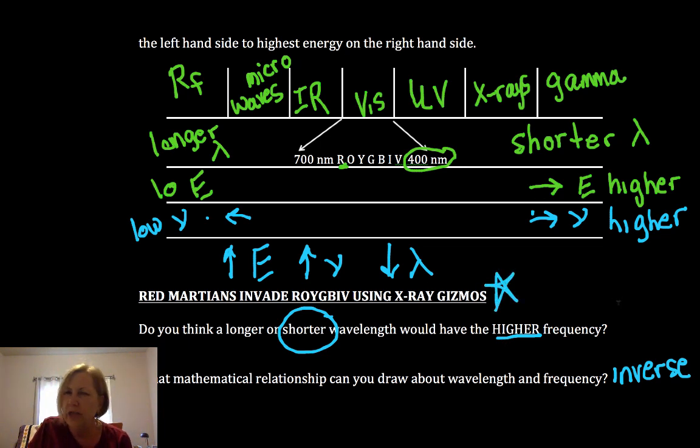Before I leave this slide, I don't want to forget—I don't like tricks that bypass understanding, but I love mnemonic devices that help us memorize. My friend shared this with me, Alicia Marusik, learned so much from you: Red Martians (radio, microwave) invade (infrared) ROYGBIV using (ultraviolet) x-ray gizmos. So Red Martians invade ROYGBIV using x-ray gizmos can give you this order.